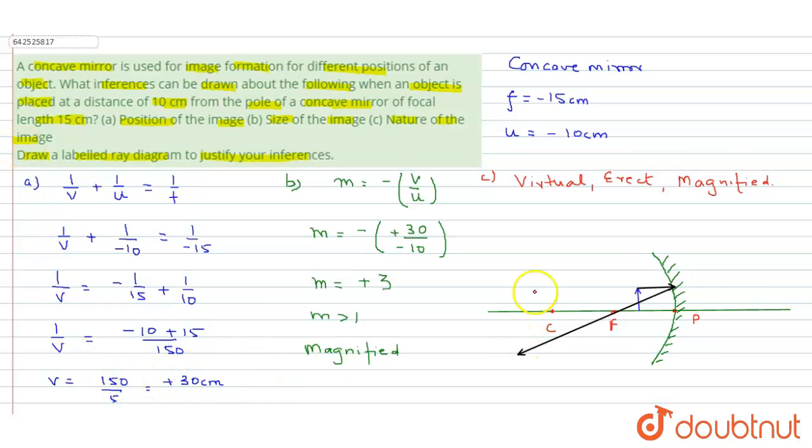We will take one more light ray, which will originate from the tip of the object, travel to pole, and it will reflect back with the same angle as it was incident upon.